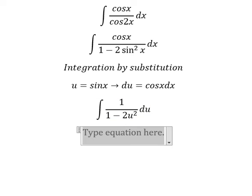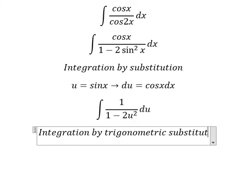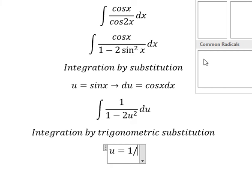Next we need to use integration by trigonometric substitution. So I will put u equals 1 over the square root of 2 times sin t.